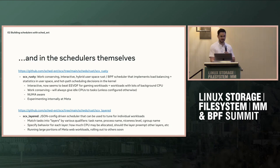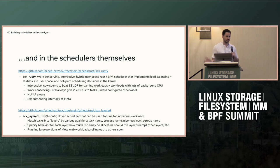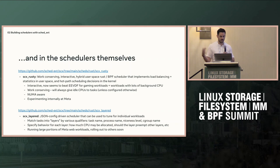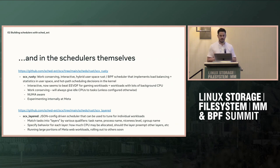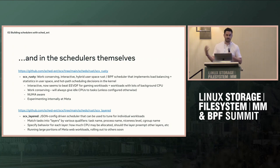The schedulers themselves have also improved a lot. SCX Rusty is the one I've been focusing on the most. This is a work-conserving interactive hybrid scheduler. Hybrid means it has a user space portion and a kernel portion. The user space portion does all the load balancing math using floating point numbers — stuff that you can do in the kernel, but it's a lot easier to do in user space. All the hot path decisions are made in the kernel. Load balancing is only done every one or two seconds, so you don't really lose much. It's interactive, which means it does really well with workloads that need super low latency. It's new software and we're currently experimenting with it at Meta.